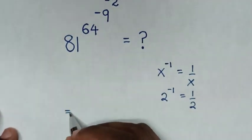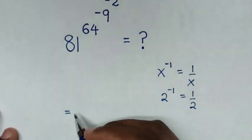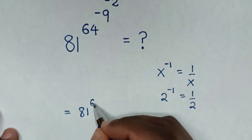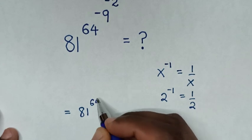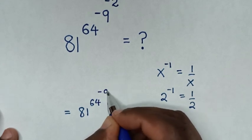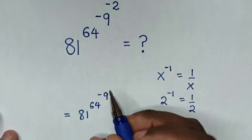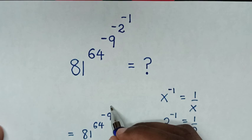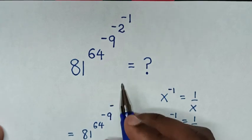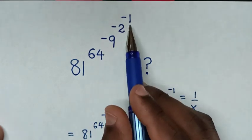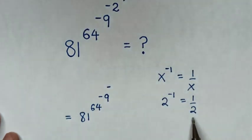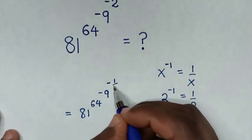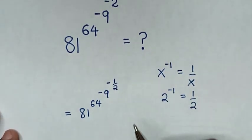So it will be equal to 81 power of 64 power of negative 1. Then this negative, we leave it behind. So 2 power of negative 1 is a half, making it negative a half.